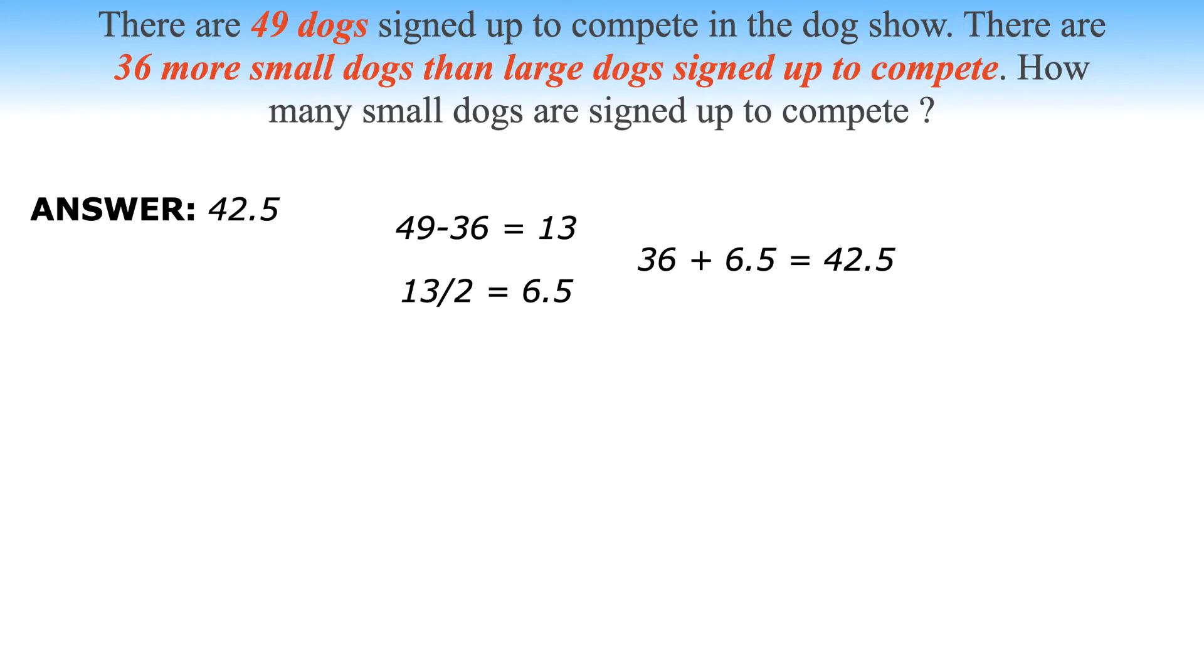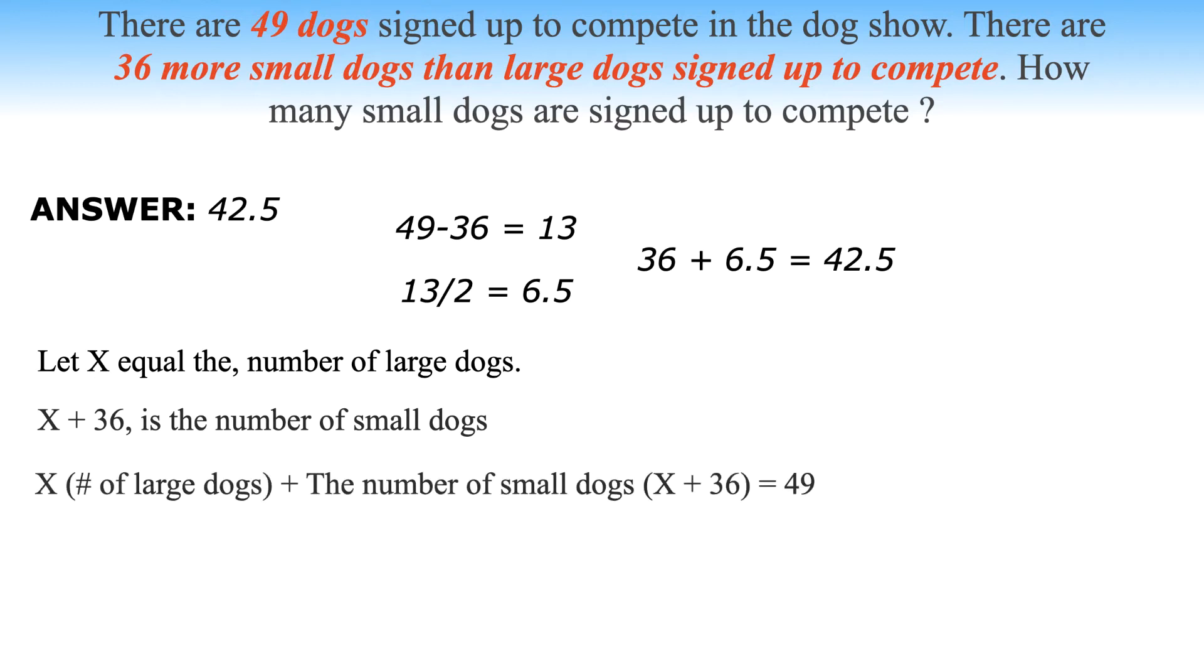Another simple way to solve this problem is through algebra. Let X equal the number of large dogs. Hence X plus 36 is the number of small dogs. So X, which is the total number of large dogs, plus the number of small dogs equals 49.